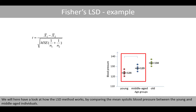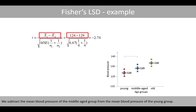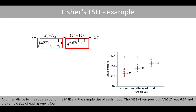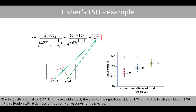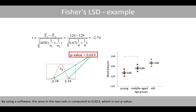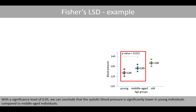We look at how the LSD method works by comparing the mean systolic blood pressure between the young and the middle-aged individuals. We subtract the mean blood pressure of the middle-aged group from the mean blood pressure of the young group, and divide by the square root of the MSE and the sample size of each group. The MSE from our ANOVA was 6.67 and the sample size of each group is 4. The t-statistic is equal to negative 2.74. Using a two-sided test, the area to the right-hand side of 2.74 and to the left-hand side of negative 2.74 in a t-distribution with 9 degrees of freedom corresponds to the P-value. By using software, the area in the two tails is computed to 0.023, which is our P-value. With a significance level of 0.05, we conclude that systolic blood pressure is significantly lower in young individuals compared to the middle-aged individuals.